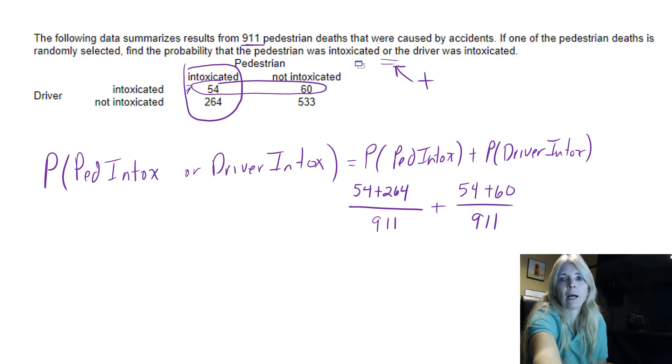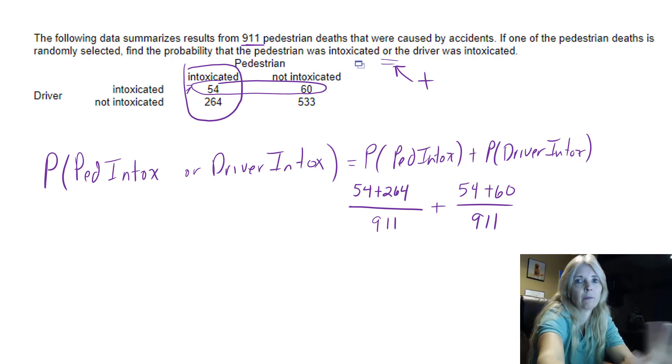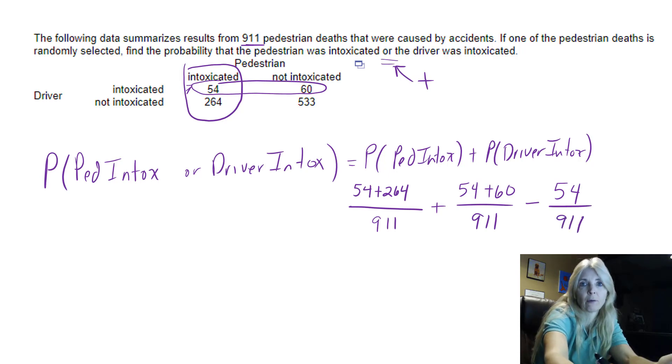And this is why they always say if these events are not independent, okay, meaning that nothing's related, but they are in this case in this table, you have to subtract out the intersection, which is the 54 because that's what got double counted.